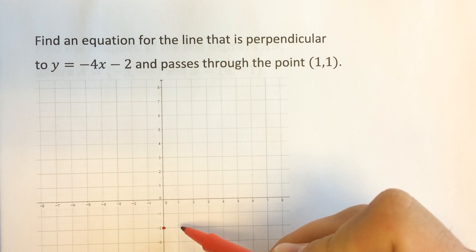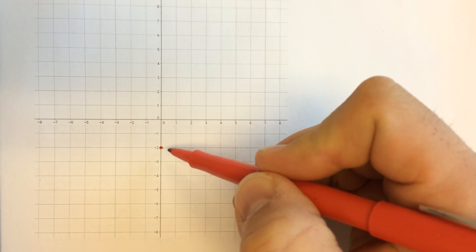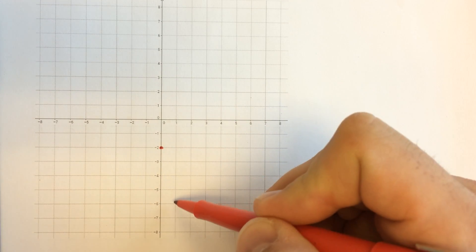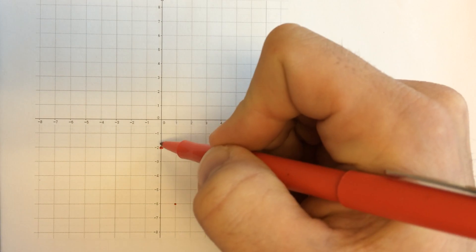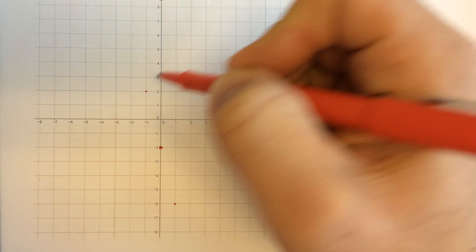So that means for every run of 1, for every 1 that we go over to the right, we're going to go down 4. So I'll just do that here and go back the opposite direction.